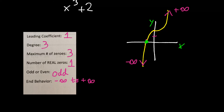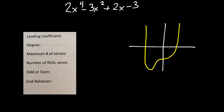Now let's try another example: 2x to the fourth minus 3x squared plus 2x minus 3, with its approximate graph. The leading coefficient is 2, the coefficient on the variable with the highest exponent power. The degree is the highest exponent, which is 4, and that matches our maximum number of zeros, which is also 4. Looking at the graph, the function only crosses the x-axis in two spots, so the number of real zeros is 2.